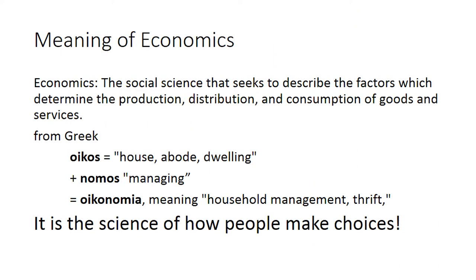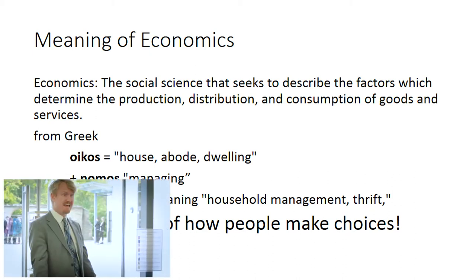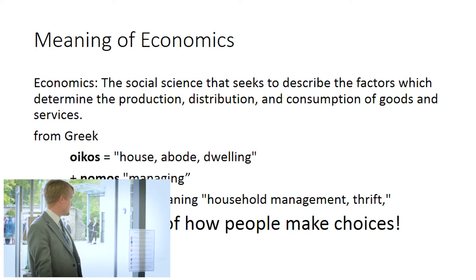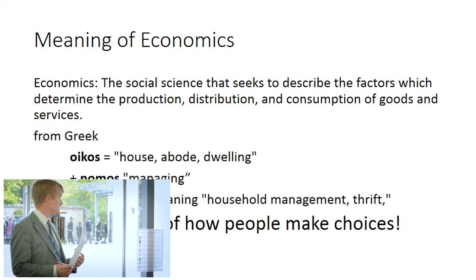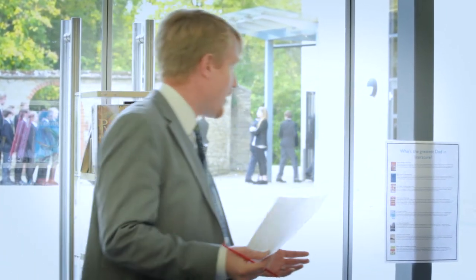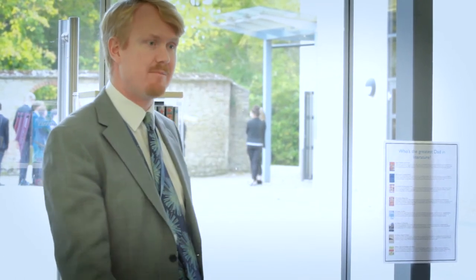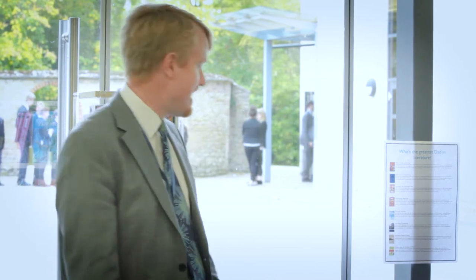To begin with, because I realize we're trying to make this lecture as accessible as possible, one question is: if you don't study it, what is economics? Economics is a social science that seeks to describe the factors which determine the production, distribution, and consumption of goods and services. It comes from the Greek word oikos, meaning house or dwelling, and nomos, meaning managing. So basically what we're doing is managing a household — keeping accounts and keeping tabs. Another way of describing economics is it's a science of how people make choices.